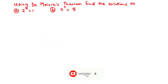In the previous videos, we learned how to find the roots or the solutions to a complex number using the exponential form. However, in this video, we are going to use De Moivre's theorem to achieve that same purpose. So how do we find the roots of z to the power 4 equals 1, and then z to the power 3 equals 8?